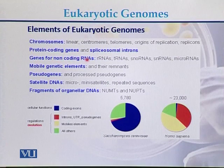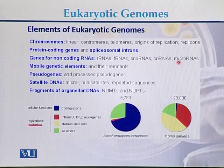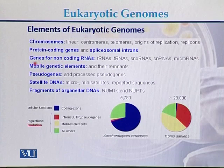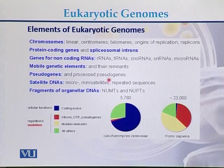Genes for non-coding RNAs are also present on eukaryotic genomes. These RNA-coding genes include genes for ribosomal RNA, transfer RNA, snoRNA, and micro RNAs. In addition to these genes, there are also mobile genetic elements as part of the eukaryotic genome. Eukaryotic genomes also contain pseudogenes as well as processed pseudogenes.